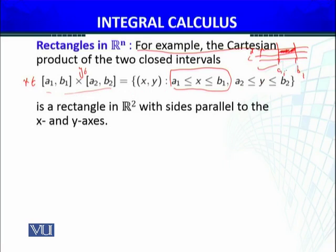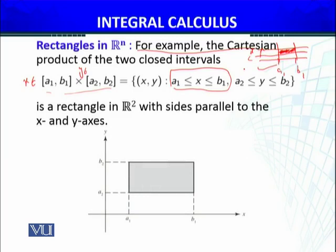The sides of this rectangle correspond to the X-axis and Y-axis. On the X-axis we have the interval [A1, B1], and on the Y-axis we have the interval [C, D]. The intersection of these two strips gives us the rectangle, which is plotted here. These strips' intersection is the shaded region — this is the rectangle in R2.